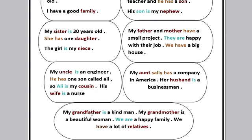My grandfather - جدي - is a kind man. طبعا is عشان المفرد. My grandmother is a beautiful woman - جدتي امرأة جميلة. We are happy family - أحنا عائلة سعيدة. جبنا are هنا بمعنى يكون علشان السابجكت we. We have a lot of relatives - لدينا الكثير من relatives اللي هي الأقارب. دي الكلمات الخاصة بالعائلة.